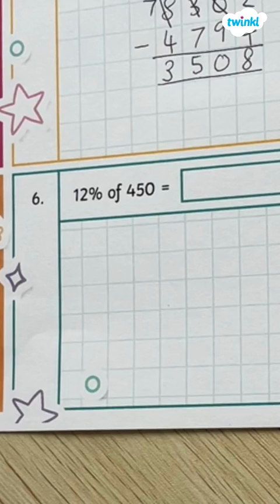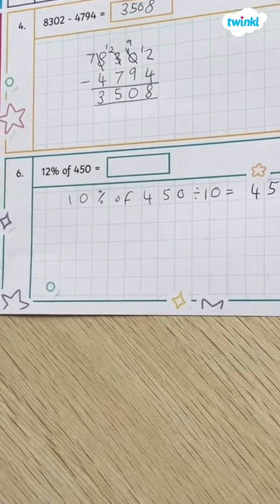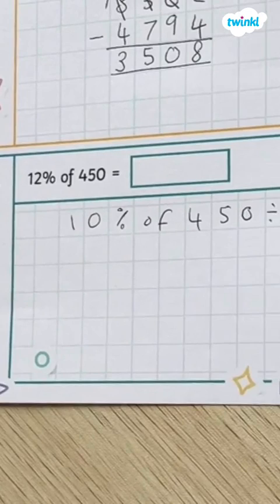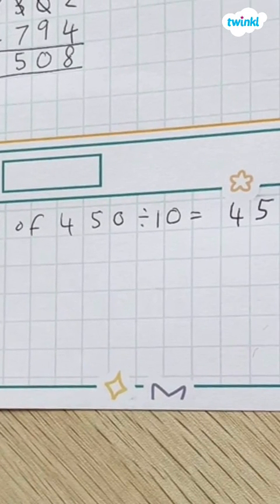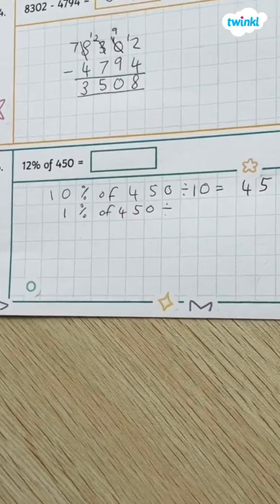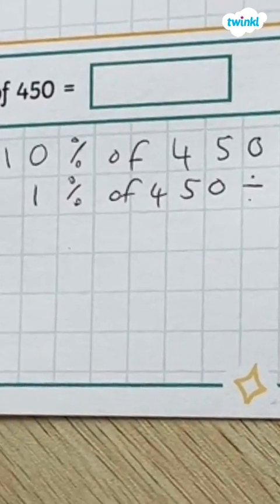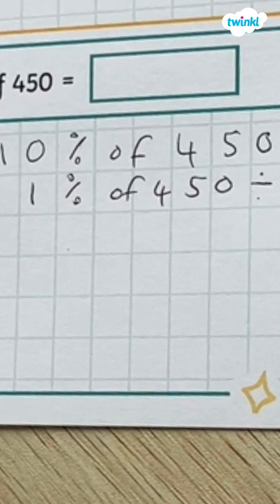What's 12% of 450? The best way is to work out 10% first. To work out 10% you divide 450 divided by 10 which is 45. To work out 2%, first work out what 1% is of 450, and that would be divided by 100.